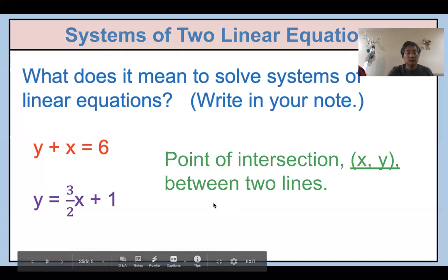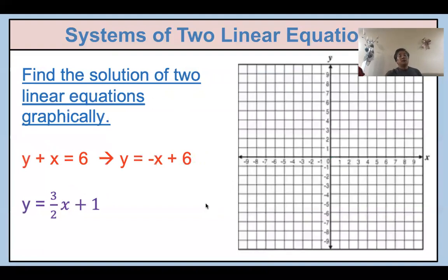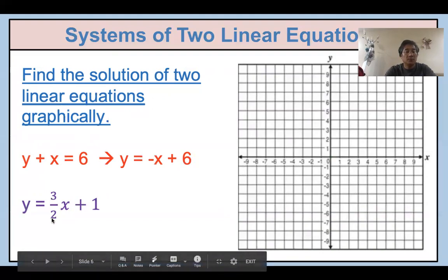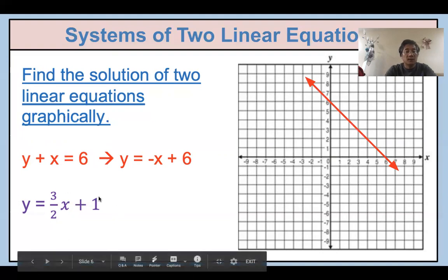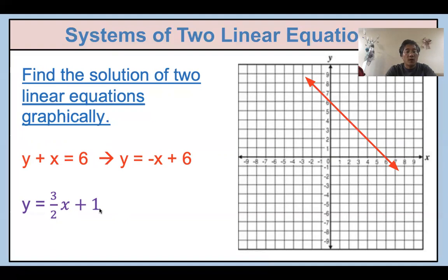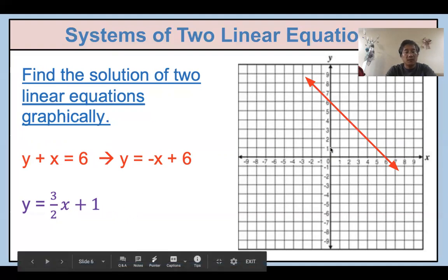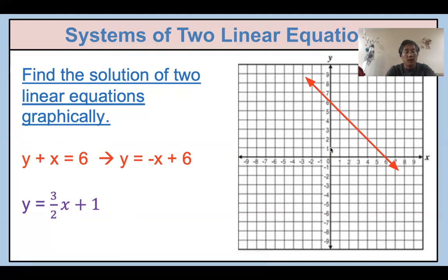Let's try with examples. We already have y = -x + 6. If you have an equation like this, you know how to change it into slope-intercept form. Now there is a second equation: y = (3/2)x + 1. You already know how to draw y = -x + 6. For the second graph, you start from the y-intercept, which is 1, and then use the slope.